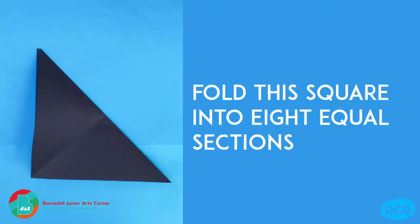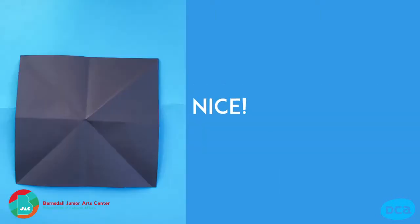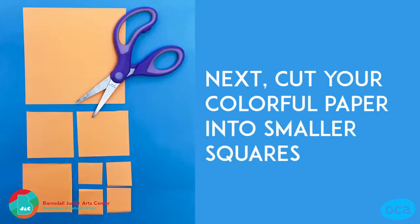Fold the square into eight equal sections. Next, cut your colorful paper into smaller squares.